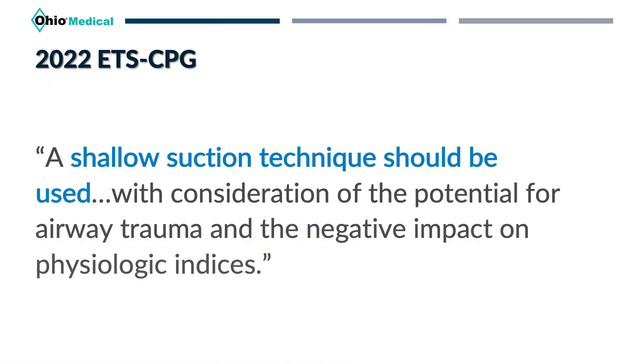To quote the 2010 CPG: the use of shallow suction is suggested instead of deep suction based on evidence from infant and pediatric studies. Shallow suctioning is recommended to prevent trauma to the tracheal mucosa. The 2022 CPG states that since that guideline, no new evidence convincingly impacts that recommendation. The neonatal and pediatric population has been suctioning this way for many years, and while we tend to treat pediatric and adult patients differently, there's no difference in the actual anatomy of the airway tissues — so it begs the question: why should there be two different standards for suctioning?